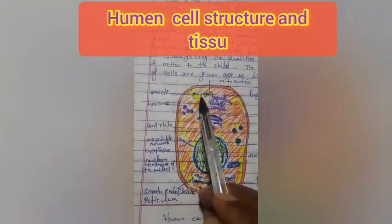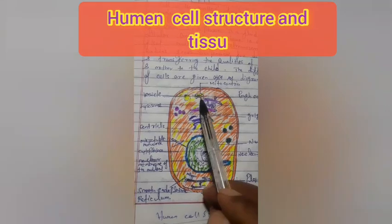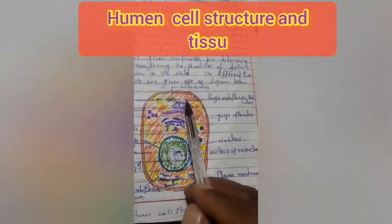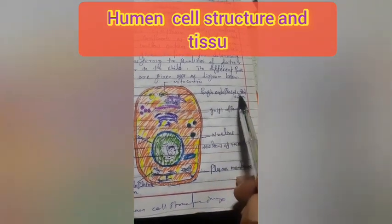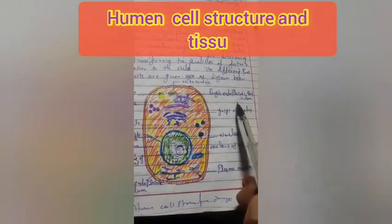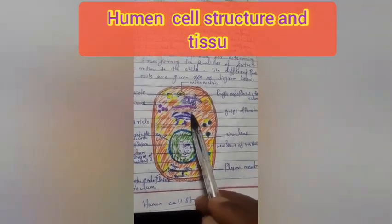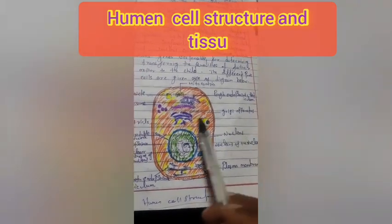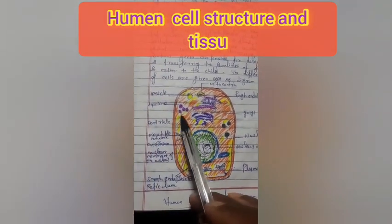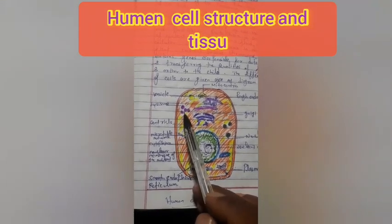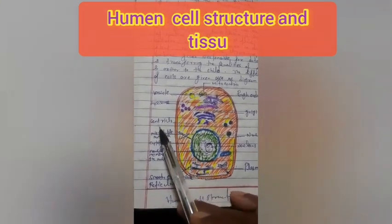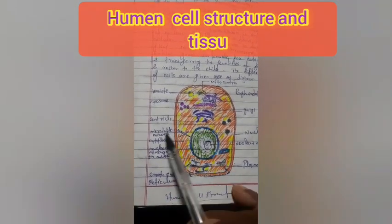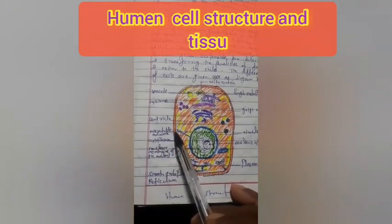Number 1: Nucleus. Number 2: Mitochondria. Number 3: Rough endoplasmic reticulum. Number 4: Golgi apparatus. Number 5: Lysosome. Number 6: Centrioles. Number 7: Microtubule network.